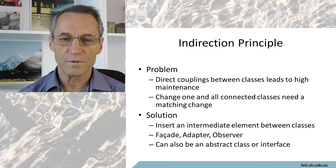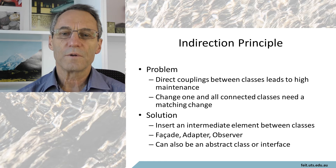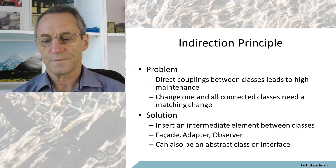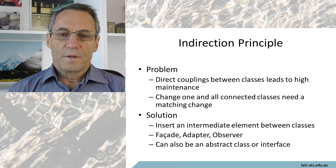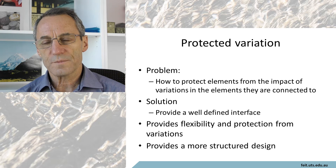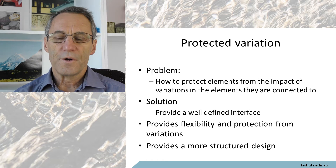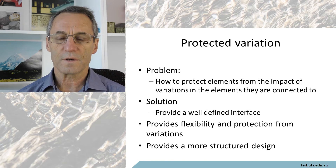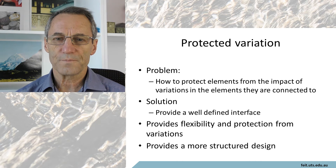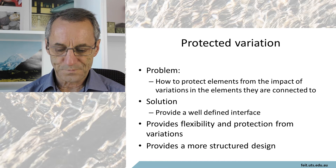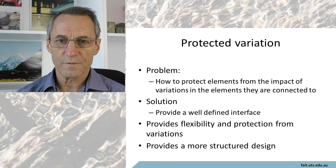With a facade you can maintain things fairly independently and update them with a great deal more independence. If you don't have that and you have direct connections between classes, then changes in one tend to require changes in the other. There's also the idea of protected variation, where if objects are directly connected, changes need to be reflected in everything that connects.